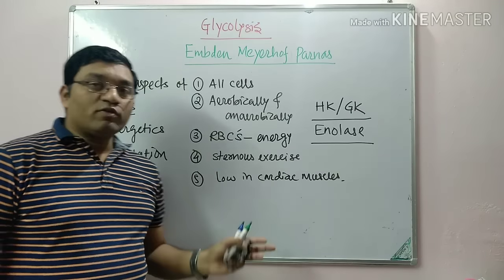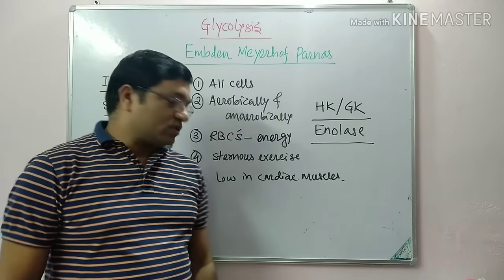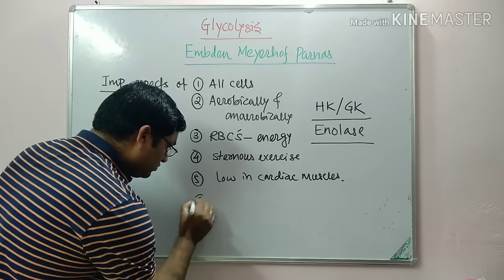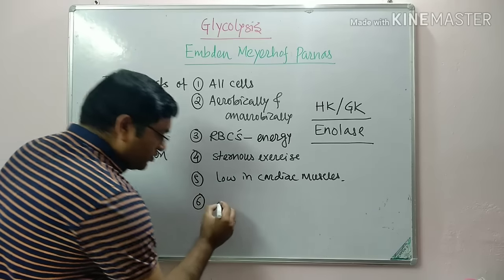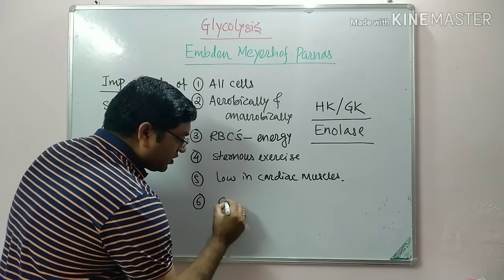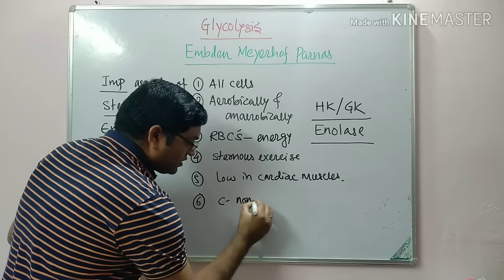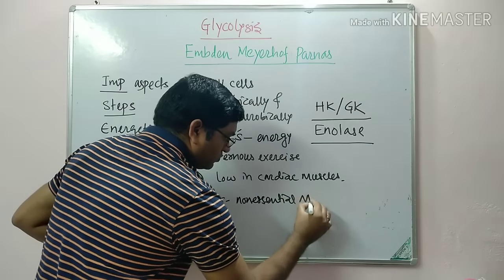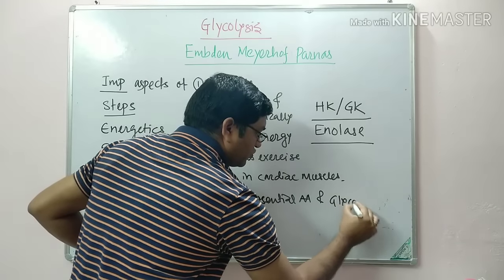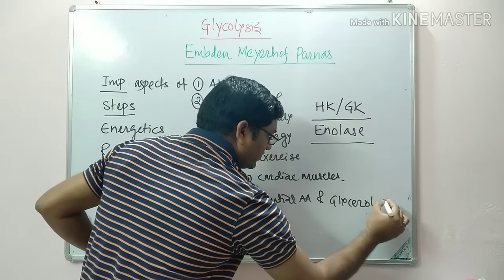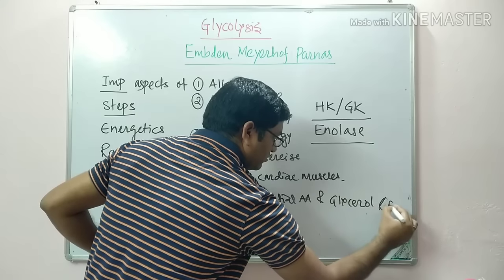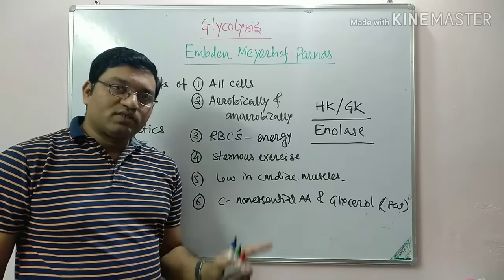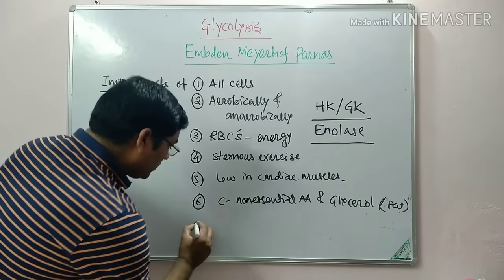Hence, energy cannot be provided by anaerobic glycolysis in cardiac tissue. Additionally, glycolysis is responsible for the generation of the carbon skeleton of non-essential amino acids. It is also responsible for the generation of the glycerol part of fat. The reversible steps in glycolysis are also involved in gluconeogenesis.